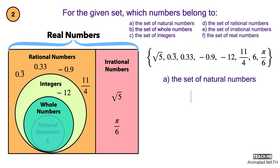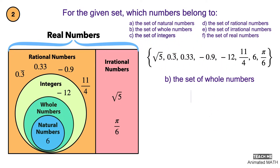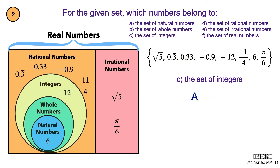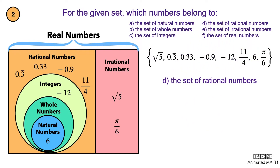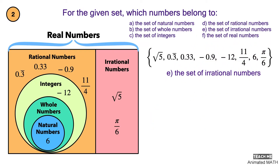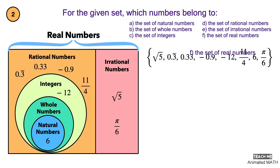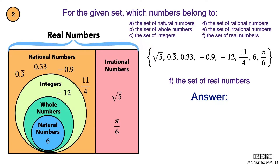The set of natural numbers contains 6. The set of whole numbers contains 6. The set of integers contains 6 and negative 12. The set of rational numbers contains 0.3 repeating, 0.33, negative 0.9, negative 12, 11 over 4, and 6. The set of irrational numbers contains square root of 5 and pi over 6. The set of real numbers contains all of the given numbers.